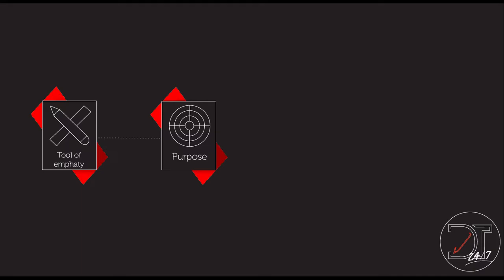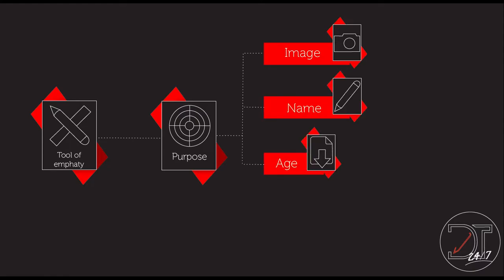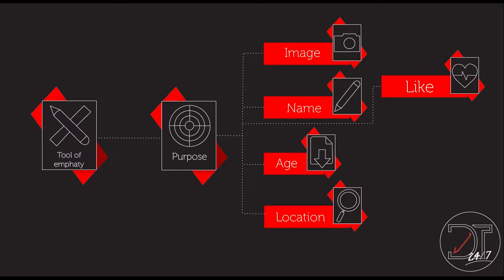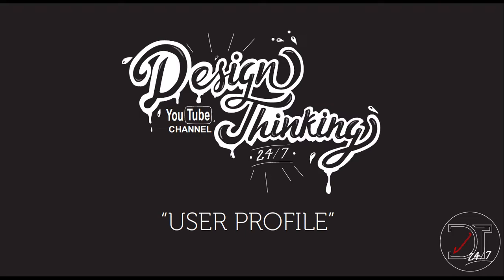It has the following components: image, name, age, location, likes, and activities. These are the basic components of a user profile. Sometimes you can be more specific in some, but these are the basics that you need to develop a user profile.